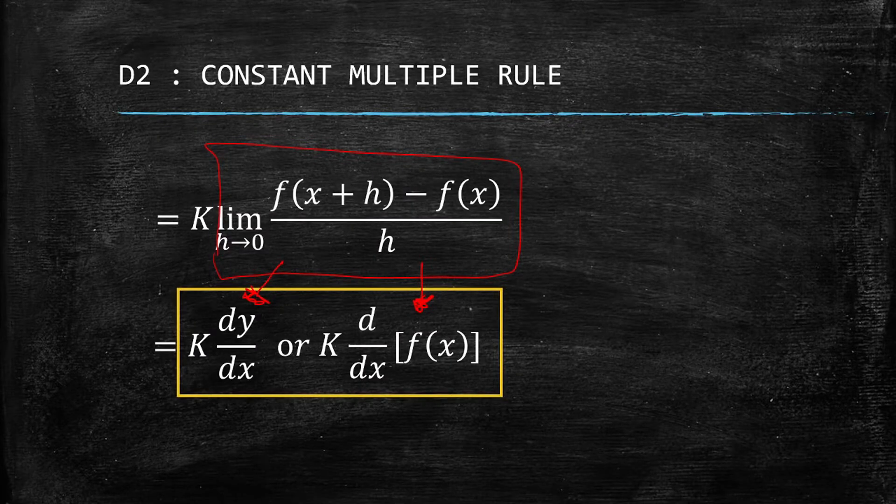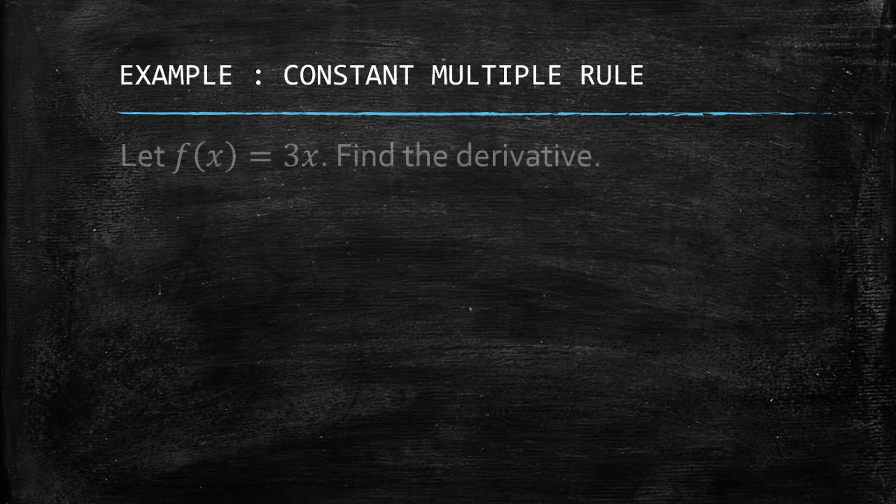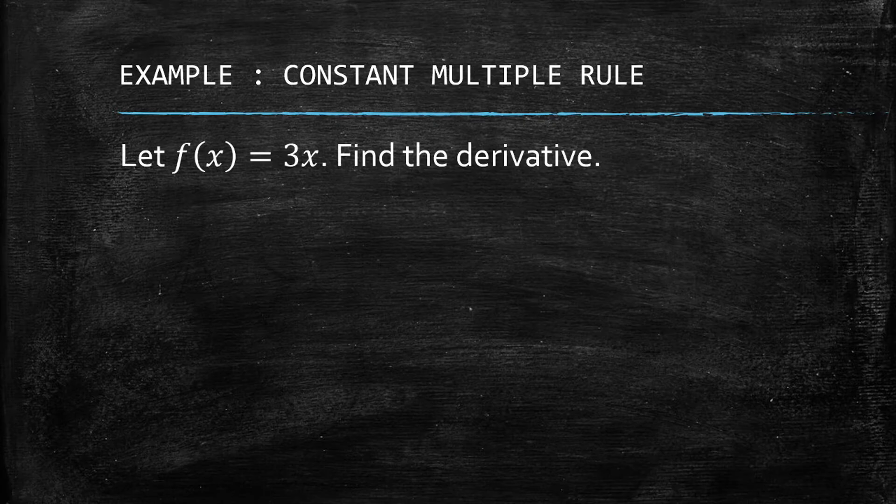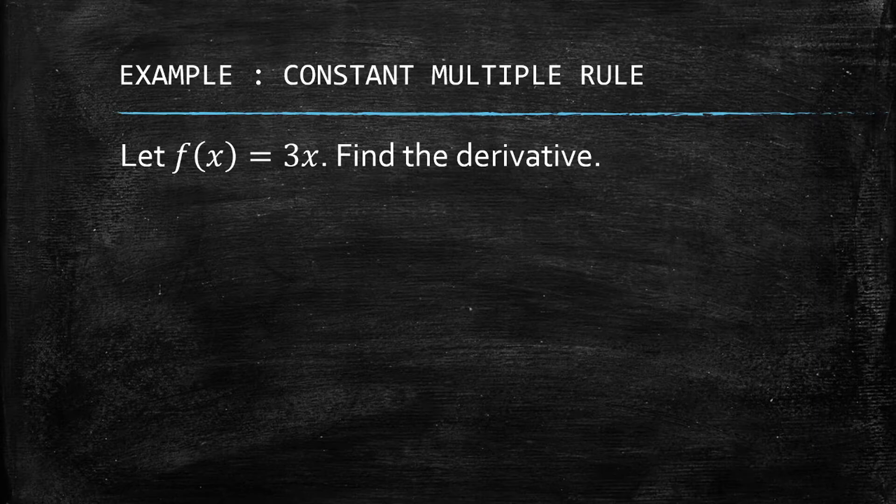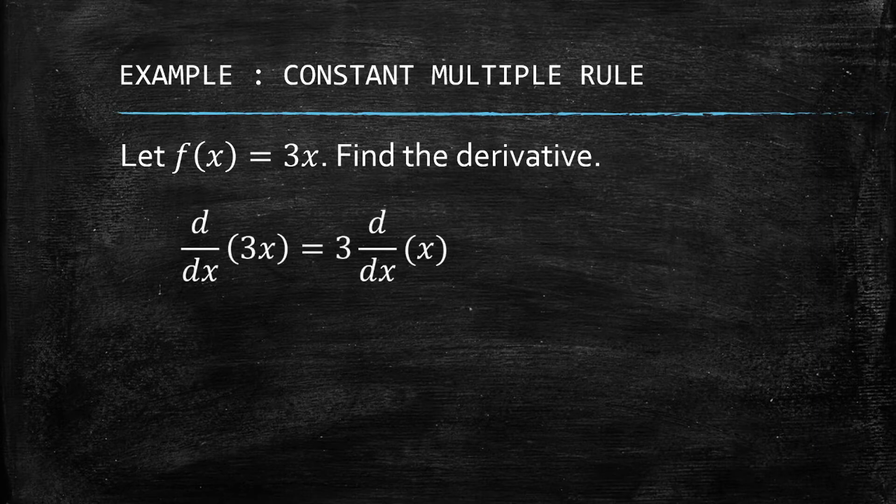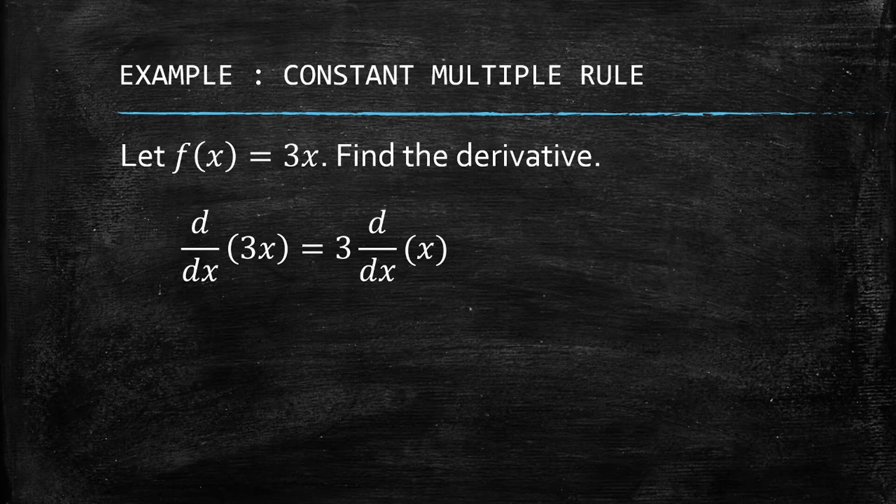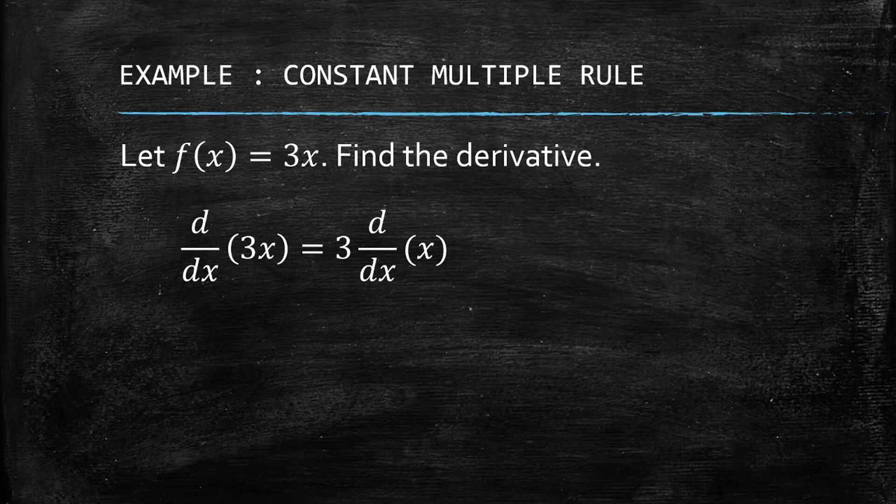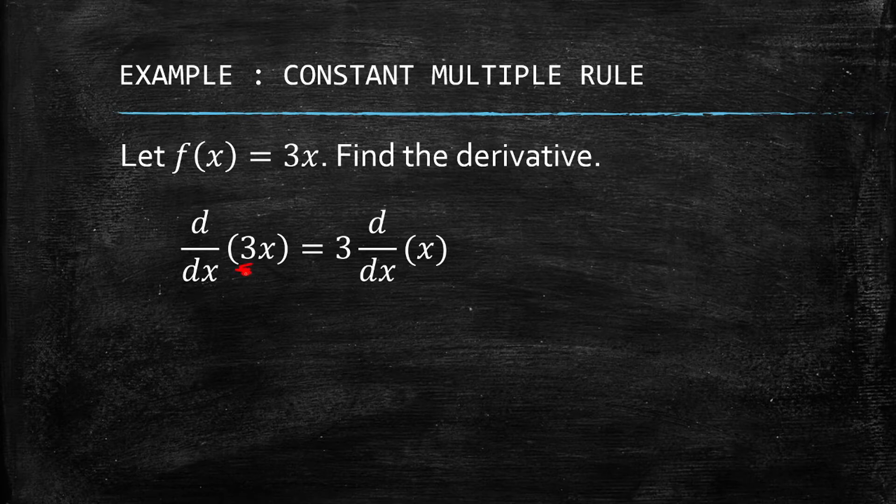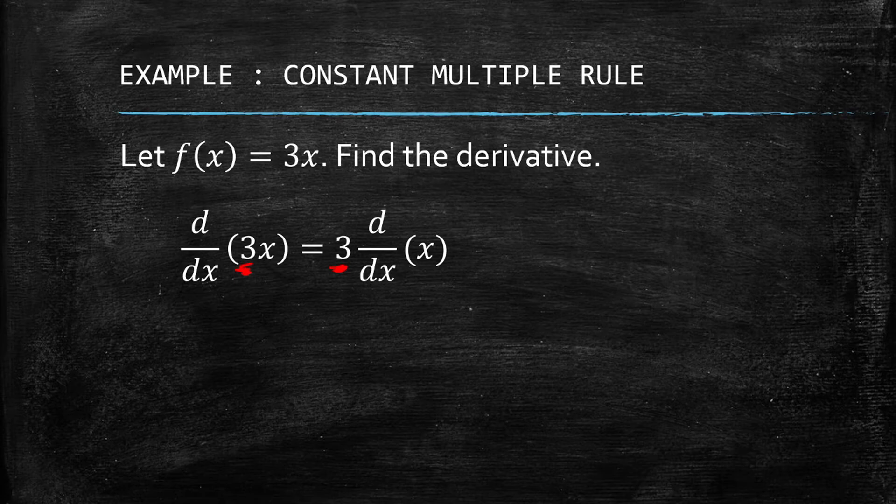Let's have some examples. If we have f(x) = 3x, we simply need to find the derivative as per instruction. Instead of using the limit definition of the derivative, we will use D2 here. So we have 3x. The 3, applying D2, is now outside of the derivative.